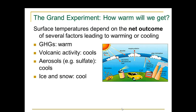So now the question is, how warm will we get? Surface temperatures depend on the net outcome of several factors leading to warming or cooling. Greenhouse gases cause warming. Volcanic activity causes cooling. Aerosols like sulfate also cool, and ice and snow cool. So which will win?